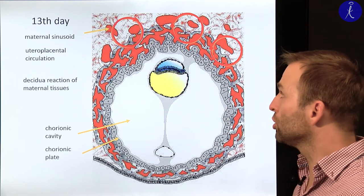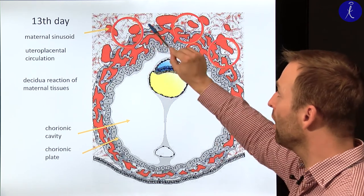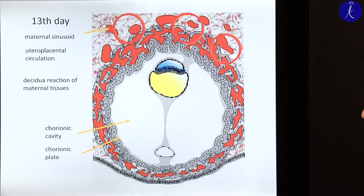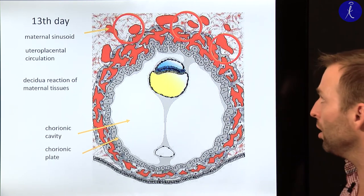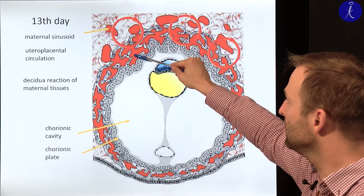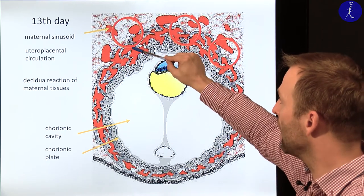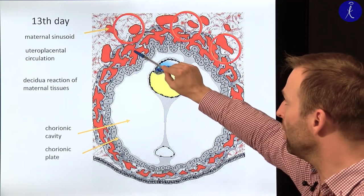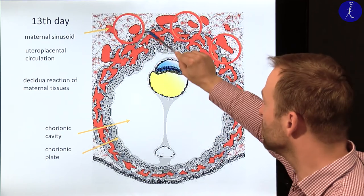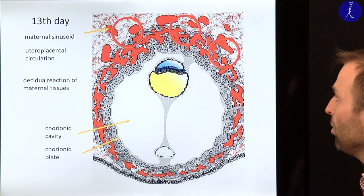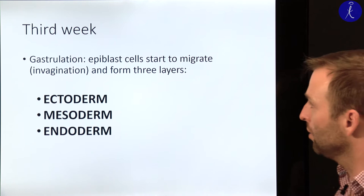This shows that blood is starting to circulate — uteroplacental circulation. This is maternal blood, and inside here you have maternal blood which is exchanged with fresh maternal blood, so a circulation of maternal blood happens into and out of the placenta.